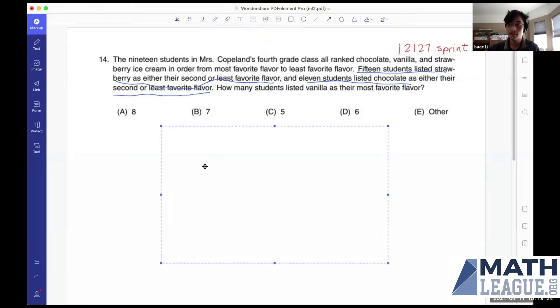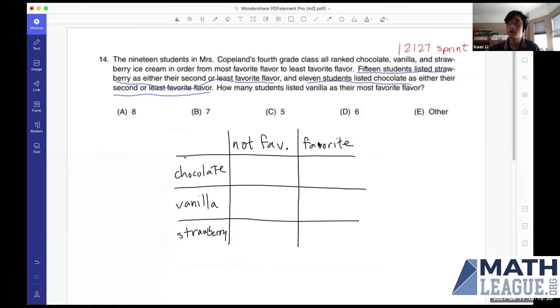And with that, let's go ahead and bring up a helpful chart. So as you can see, I listed chocolate, vanilla, and strawberry, and we can find how many did not list it as a favorite and how many listed it as a favorite. And what's so special about these is that these rows here all add up to 19 because that's the total number of students, and all these columns will add up to 19 as well.